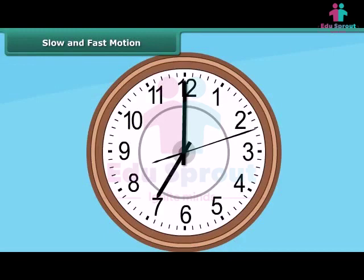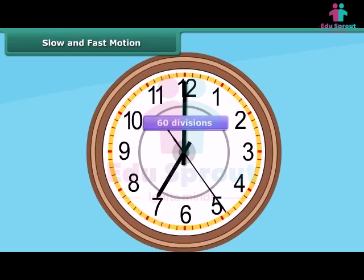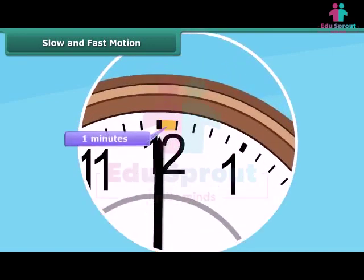Have you ever observed a wall clock? A simple wall clock or a wrist watch has a circular dial with three needles. The circular dial is divided into twelve equal parts, with each division representing five minutes. Observe the dial more closely and you will find that it has sixty smaller divisions in it. A single small division represents one minute.